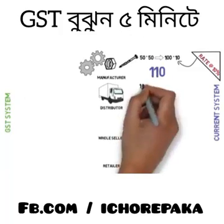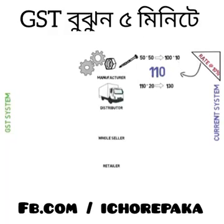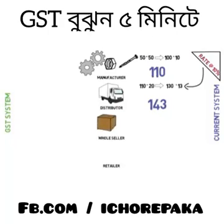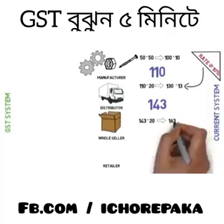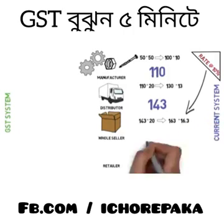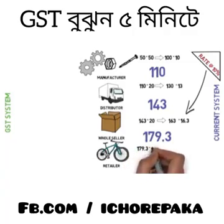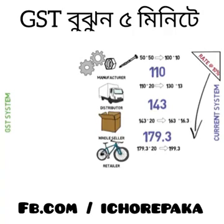The distributor adds value of Rs.20, which is his profit. So the price will become Rs.130. The distributor also sells it by adding 10% tax of Rs.13, so the product is Rs.143 now. The wholesaler follows the same pattern and the price will become Rs.143 plus Rs.20, that is Rs.163, and 10% tax is added, selling it for Rs.179.3 to the retailer. Then the retailer adds Rs.20 profit and the price will become Rs.199.3. The consumer buys this product from the retailer by paying 10% tax on Rs.199.3, so the final consumer price is Rs.219.23.